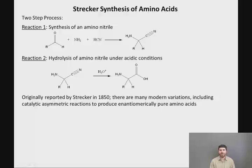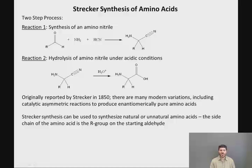In other words, only make one enantiomer, which is what you would want if you were making naturally occurring amino acids. So the Strecker synthesis can be used to synthesize either natural or unnatural amino acids. Simply the side chain on the amino acid product is the same as the R group that you use on the starting aldehyde.